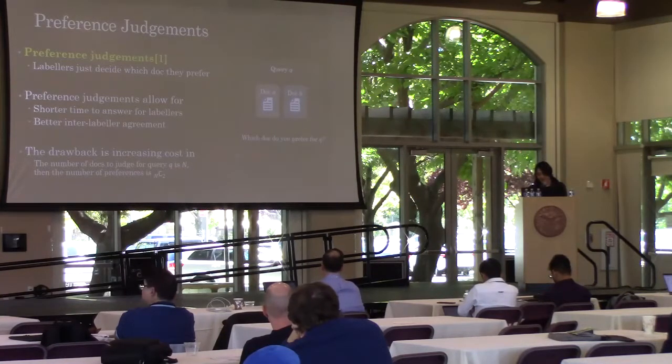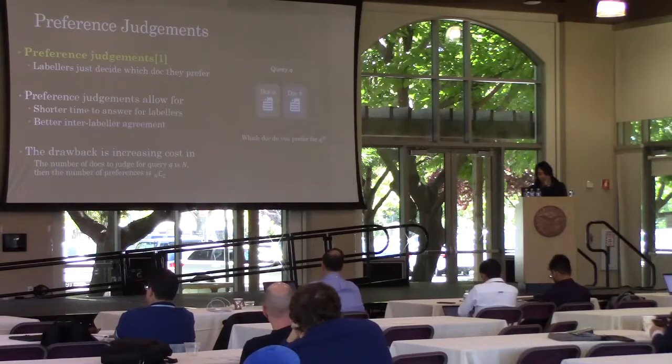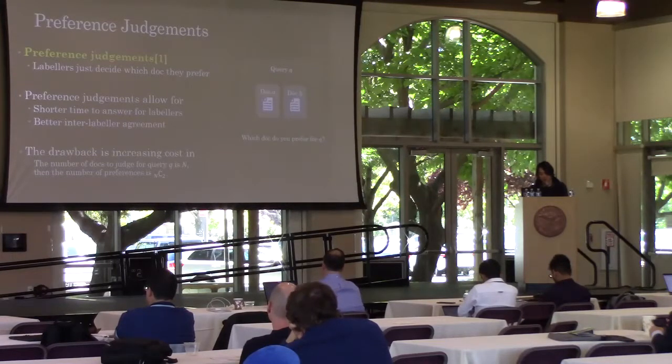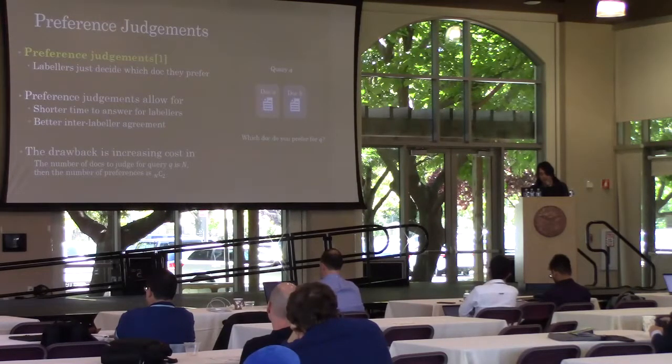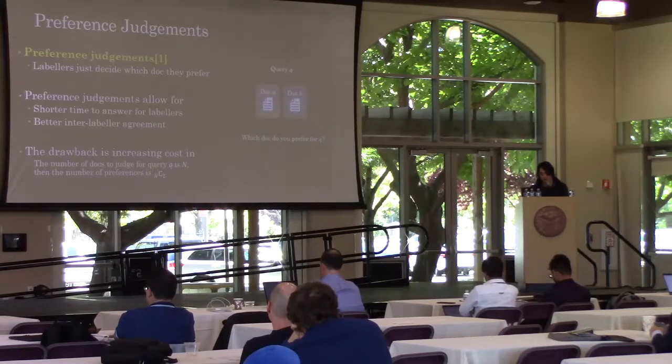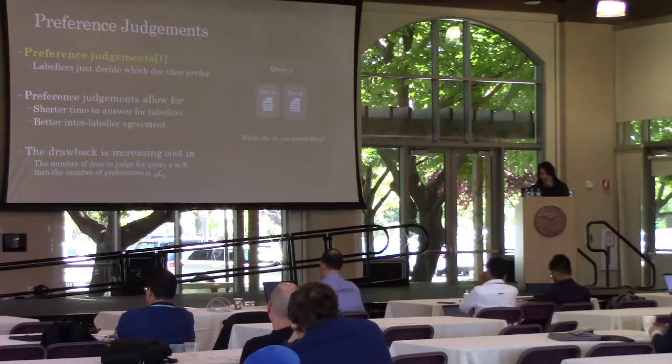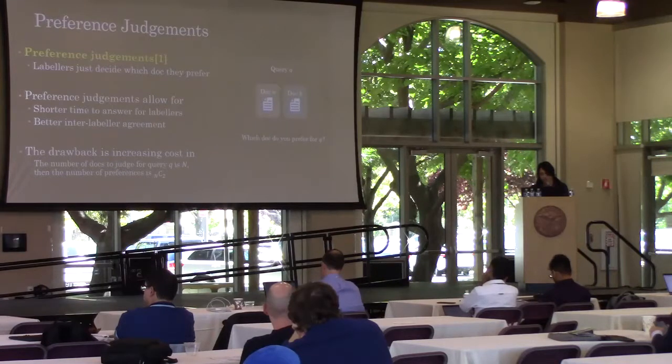Preference judgment can alleviate some of the problems. In preference judgment, labelers decide which documents they prefer. Preference judgment allows for shorter time to answer for labelers. Moreover, it gives better inter-labeler agreement because the decision is binary.